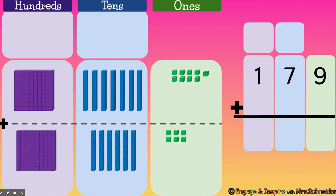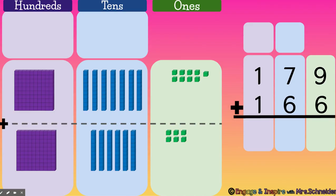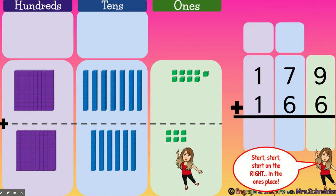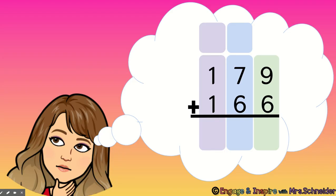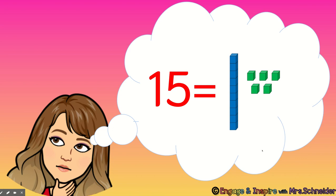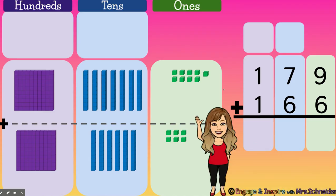179 plus 166. To solve this problem, we're going to start on the right in the ones place. We're going to add together our ones: nine ones plus six ones equals 15. Can we write 15 in the ones place? No. We know that 15 is represented as one 10 and five ones, so we need to regroup.